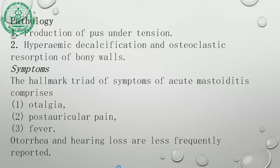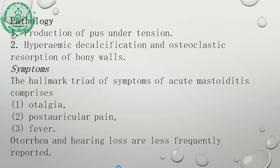Pathology includes production of pus and hyperemic decalcification with osteoclastic resorption of bony walls. Symptoms consist of the classic triad: otalgia, post-auricular pain, and fever. Otorrhea and hearing loss are less frequently reported. Signs include mastoid tenderness, post-auricular swelling, ear discharge which may be mucopurulent or purulent. If pulsatile discharge is present, this is called the lighthouse sign. There is sagging of the posterior meatal wall, perforation of the tympanic membrane, swelling over the mastoid — called ironing out of the post-auricular groove. Hearing loss is conductive type. Patient mostly feels ill and toxic with low-grade fever.